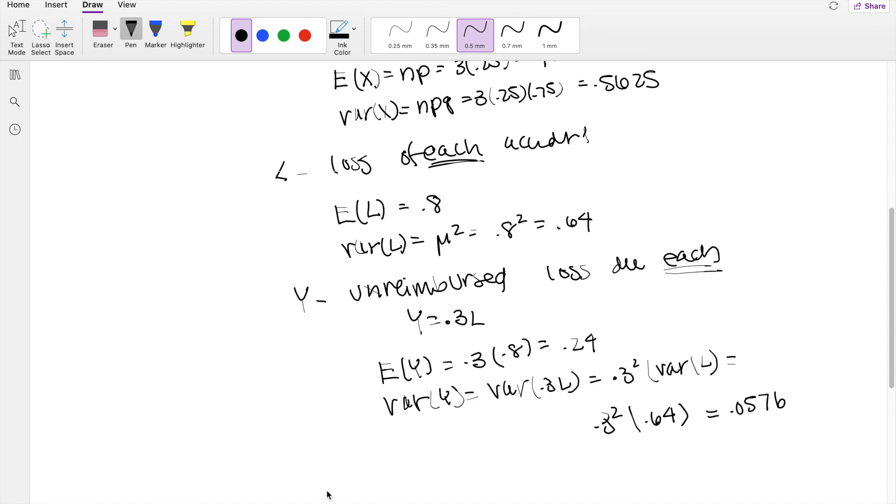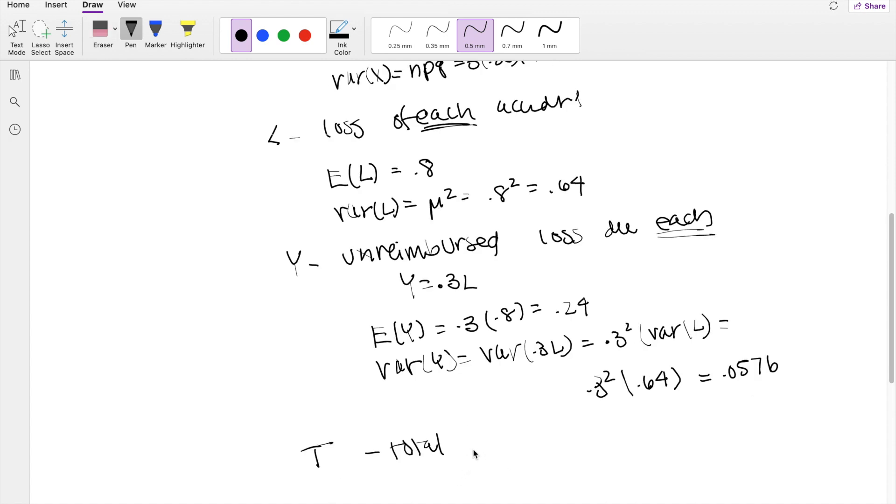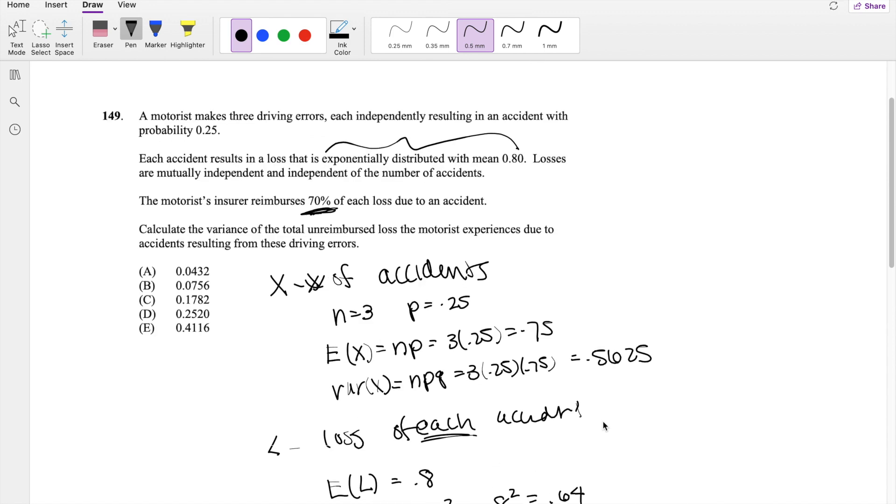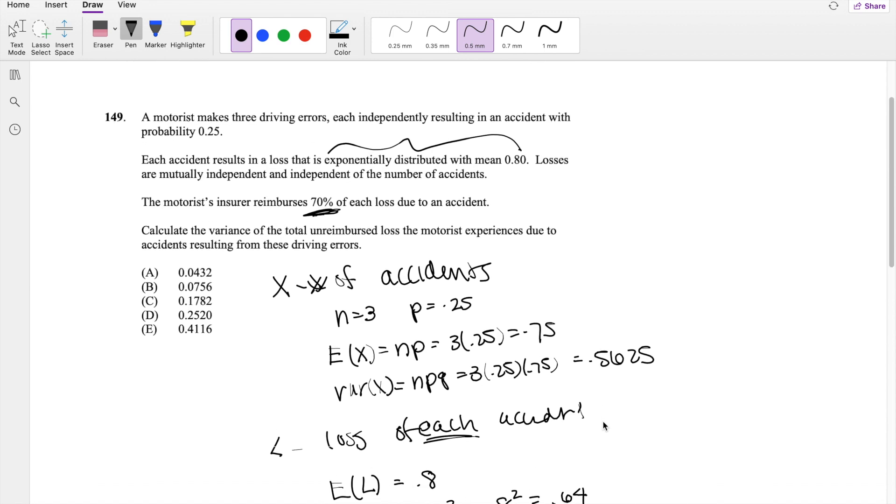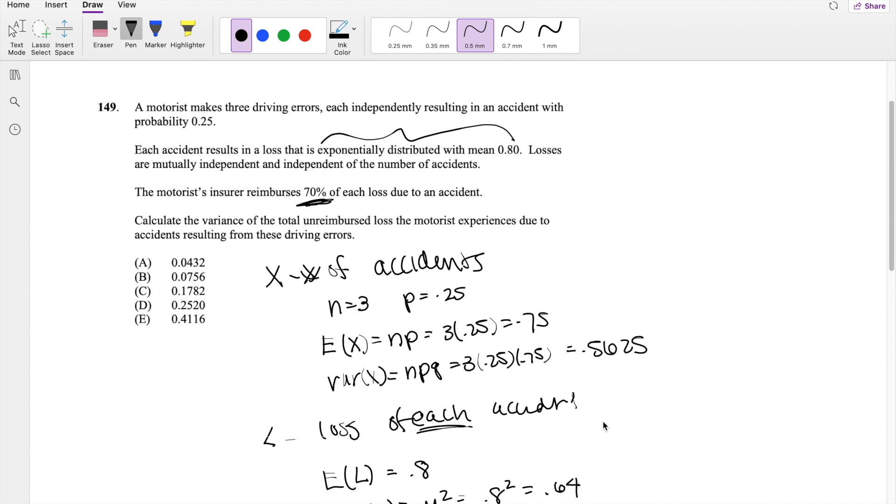And finally, we're going to let T be the total unreimbursed. Total is just through all the accidents added up together. And what are we actually looking for? Oh, we're looking for the variance of the total unreimbursed loss.